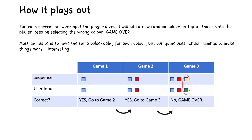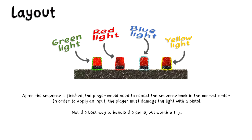For every correct answer you get, the game will add one more generated sequence onto it. It will keep doing this until you hit the wrong colour. Then it resets back and starts from the first sequence and it builds onwards. The user will repeat the sequence by hitting the lights with a pistol. This isn't the best method but it allows the user to input a sequence back so the game can validate if it's correct or not.